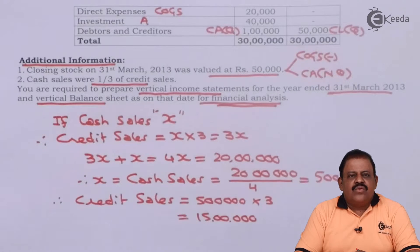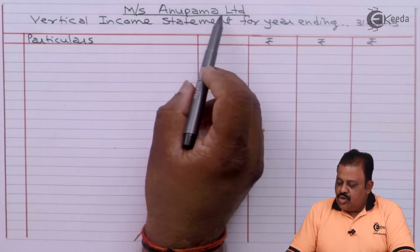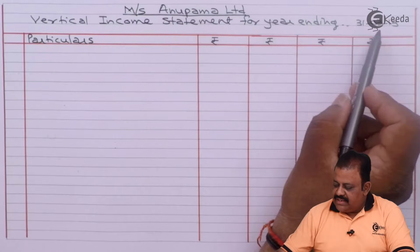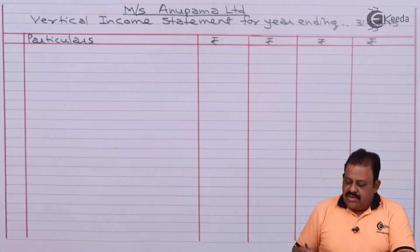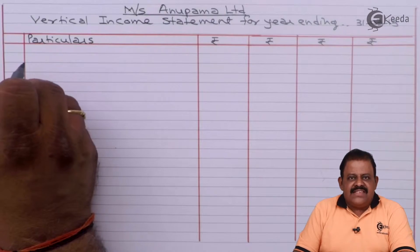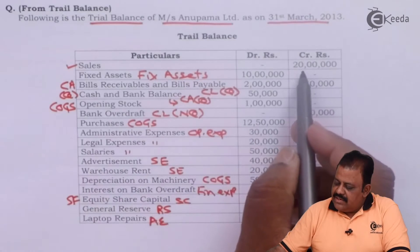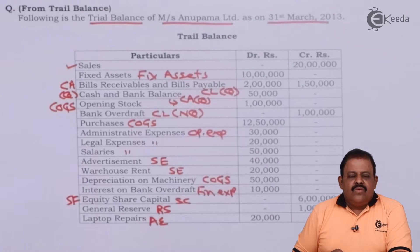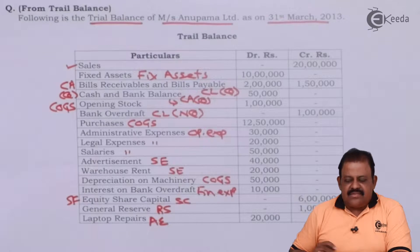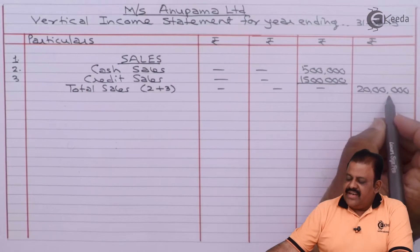Let us prepare the format: Messrs Anupama Limited, Vertical Income Statement for the Year Ending 31st March 2013. We start with the amount of sales. Total sales is given as 20 lakhs. Working note: cash sales is 5 lakhs, credit sales is 15 lakhs, total sales 20 lakhs.